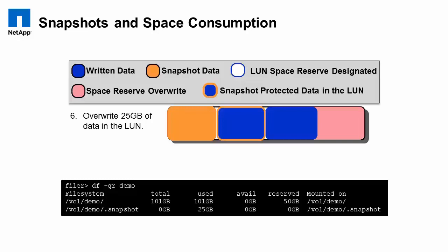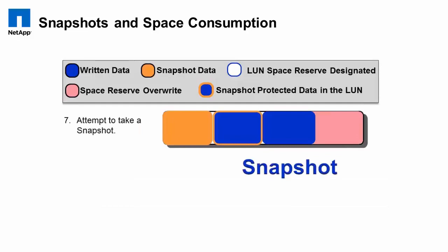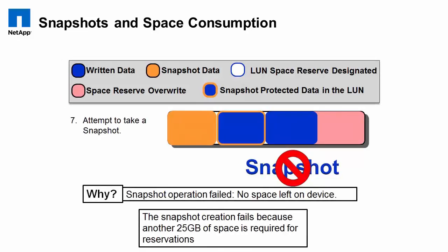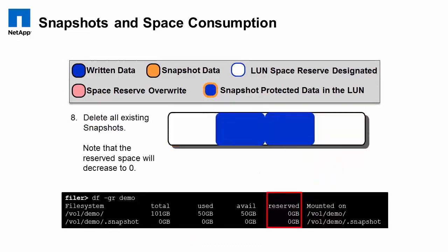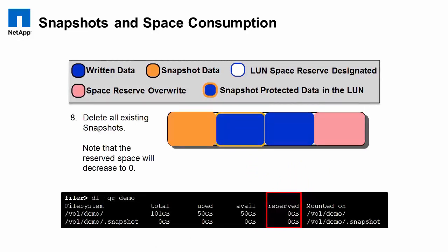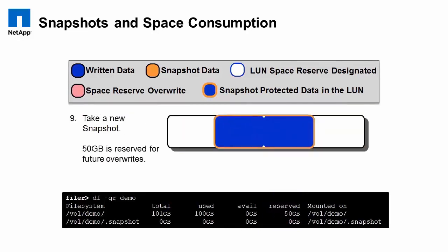So your snapshot will fail. In fact, the error will be something along the lines of 'no space left on device.' Now let's say we go ahead and delete all those snapshots. Since none of the blocks in the file system are read-only anymore, you have 50 gigabytes of real data written to the volume and 50 gigabytes free. Since you can go ahead and reserve that 50 gigs, if you were to take a snapshot, you can at that point go ahead and take your new snapshot.